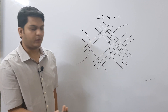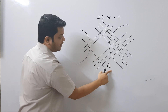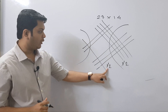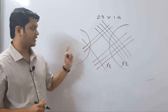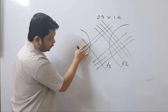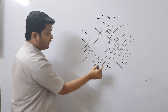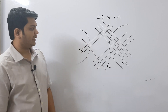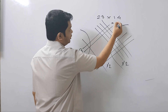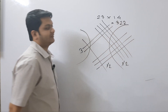So we have another 12. We will write 2 here and this 1 will carry out to the next place. So in the leftmost group we have 2 intersecting points plus 1 carry, giving us 3. Now we can write the result as 322.